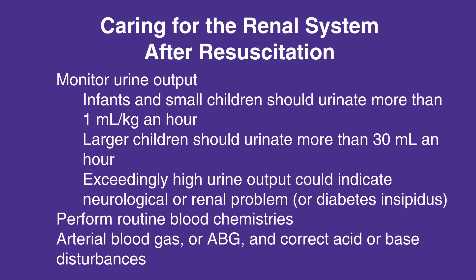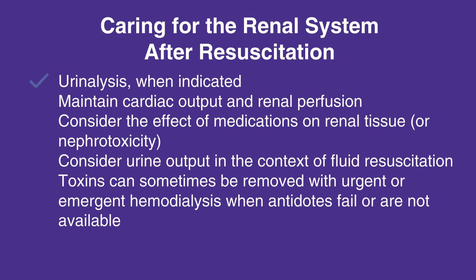When caring for the renal system after resuscitation, follow this checklist. Monitor urine output. Infants and small children should urinate more than 1 mL per kg an hour. Larger children should urinate more than 30 mL an hour. Exceedingly high urine output could indicate a neurological or renal problem or diabetes insipidus. Perform routine blood chemistries. Arterial blood gas, or ABG, and correct acid or base disturbances. Urinalysis when indicated. Maintain cardiac output and renal perfusion. Consider the effect of medications on renal tissue or nephrotoxicity. Consider urine output in the context of fluid resuscitation. Toxins can sometimes be removed with urgent or emergent hemodialysis when antidotes fail or are not available.